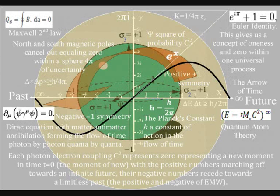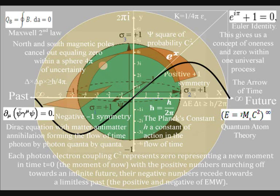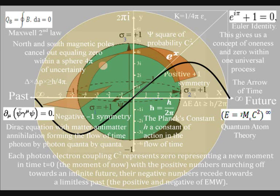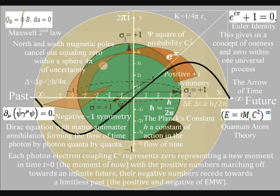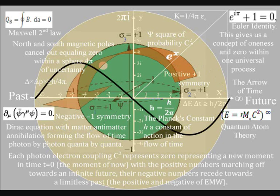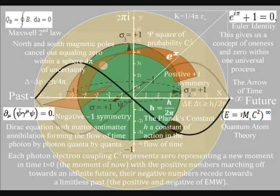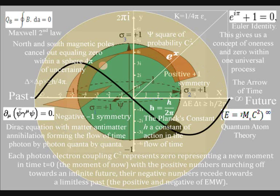This diagram shows a complex plane with the positive and negative numbers and the imaginary numbers going off at right angles with 0 in the centre. This still represents the geometry of a physical process. The 0 represents zero time or t equals 0, the moment of now, formed by light interacting with matter, with the positive numbers marching off forming a potential future with a square of probability and the negative numbers receding towards a limitless past representing the positive and negative of electromagnetic waves. In the top left hand corner we have Maxwell's second law with north and south magnetic poles cancelling out equaling 0 within a sphere of uncertainty. This forms the continuous flow of electric charge with the movement of electromagnetic fields. The electric fields will always be at right angles to the magnetic fields because the momentum of light will always be at right angles to the surface of the sphere.